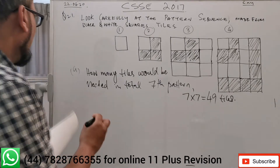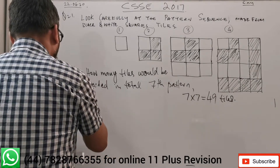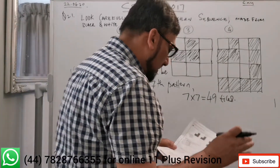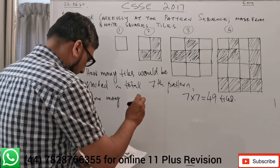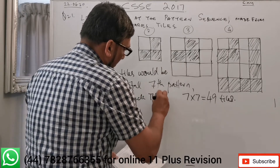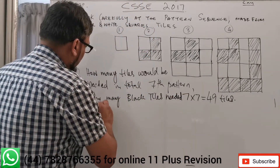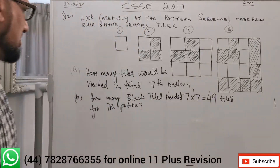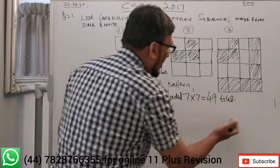Now moving on to part B. Part B asks: how many black tiles are needed for the seventh pattern? So we need to understand the pattern about how the black and white tiles work.